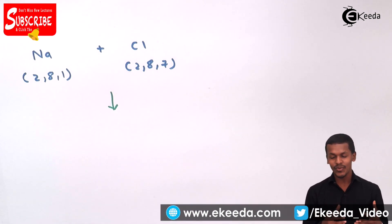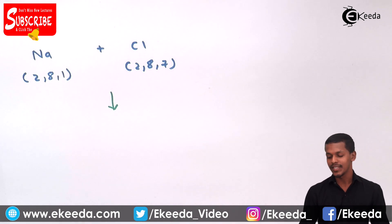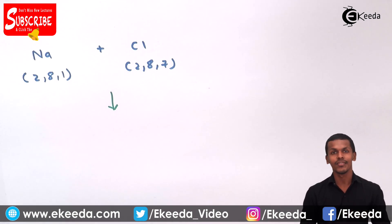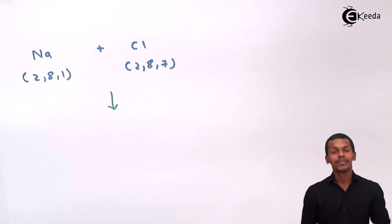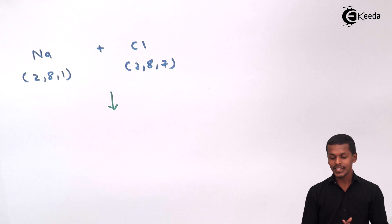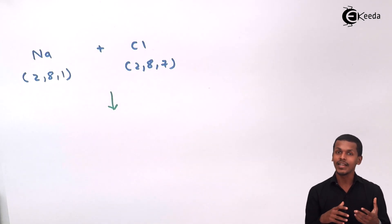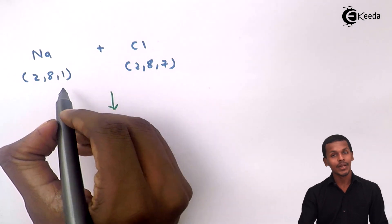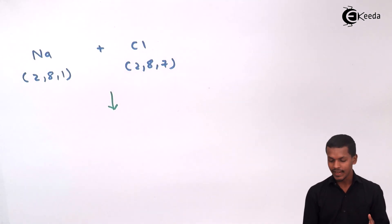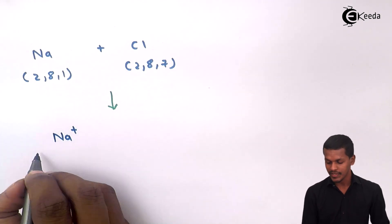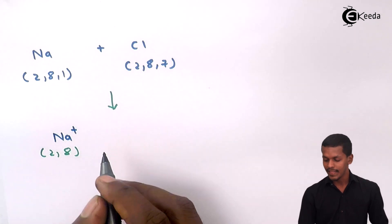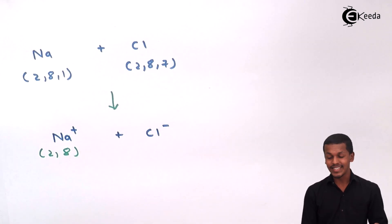Meanwhile, chlorine is the atom which needs an electron. If chlorine gets one electron, it will have an electronic configuration of 2,8,8 — similar to argon. And while giving that electron to chlorine, sodium will end up with configuration 2,8 — which is that of neon. So sodium transfers one electron to chlorine, turning into Na⁺.